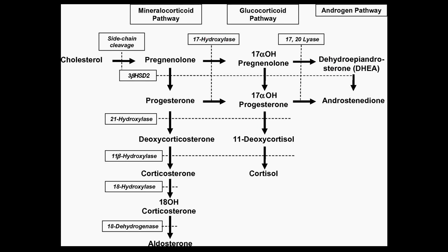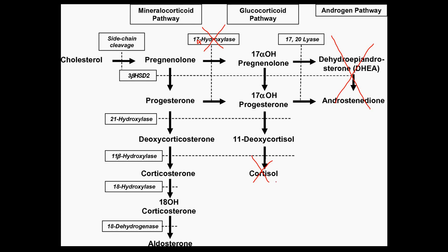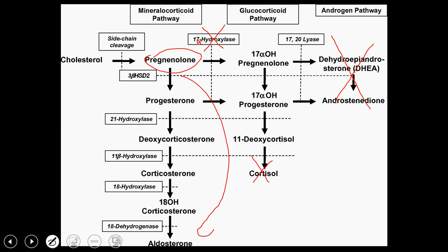The next one I want to cover is 17-alpha-hydroxylase deficiency. In this case, as a result of this deficiency, we're going to have decreased sex steroids and we're also going to have decreased cortisol. But now all of this pregnenolone is going to be shunted down the aldosterone pathway, so there's going to be an overproduction of mineralocorticoids. Patients can have high blood pressure because aldosterone reabsorbs sodium — that's how you get the high blood pressure — and it excretes potassium, so the patient is going to have low potassium.